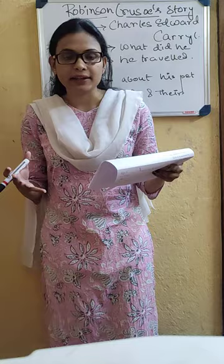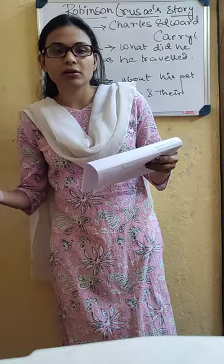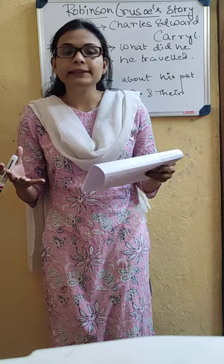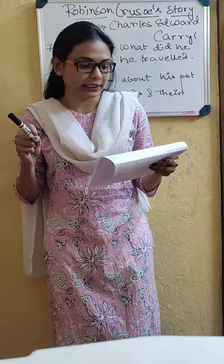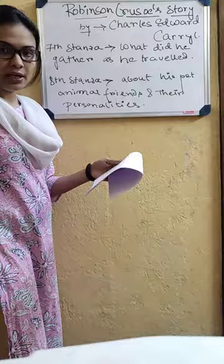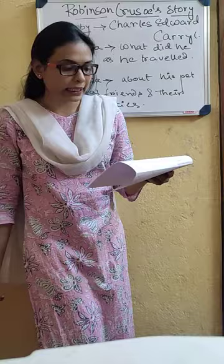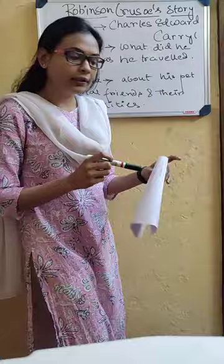While he used to travel from one corner of the island to the other corner, he and his domestic and pet animals used to gather things — whatever they saw on that island, they used to pick those things. For example, bits of moss and dirty gravel. So the seventh stanza is about what he gathered as he went on a picnic on that island.